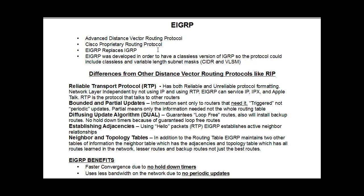EIGRP is an Advanced Distance Vector Routing Protocol. It's Cisco proprietary — created by Cisco and run on Cisco routers. It was created to replace IGRP, which was an earlier Cisco proprietary routing protocol. EIGRP was developed so that you could include subnet masks in the routing updates that go out to other routers, enabling variable-length subnet masks and classless inter-domain routing.